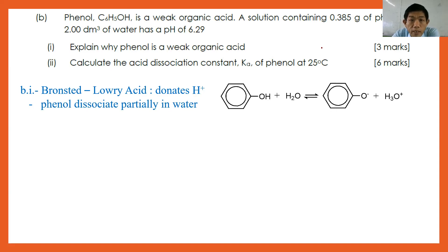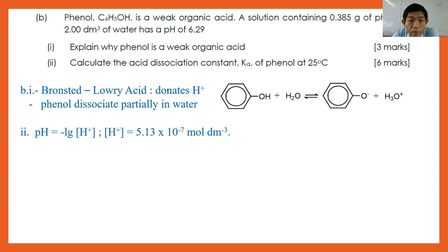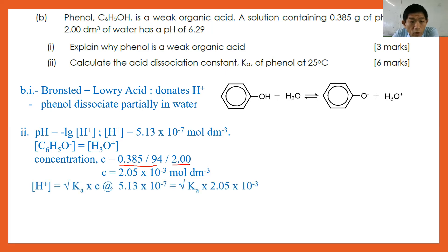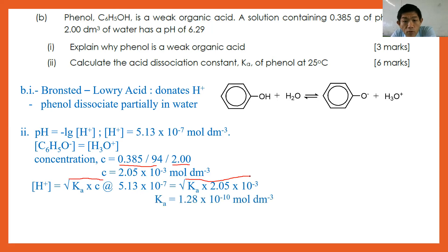Number two: calculate the dissociation constant Ka. pH = −log[H⁺], so [H⁺] = antilog(−6.29) = 5.13 × 10⁻⁷ mol dm⁻³. Concentration C = mass/(molar mass × volume) = 0.385/(94 × 2.00) = 2.05 × 10⁻³ mol dm⁻³. Using [H⁺] = √(Ka × C): 5.13 × 10⁻⁷ = √(Ka × 2.05 × 10⁻³), giving Ka = 1.28 × 10⁻¹⁰ mol dm⁻³.